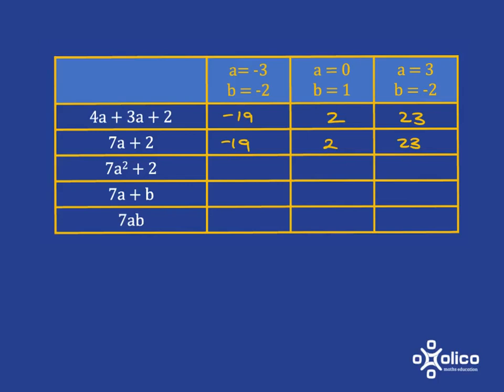And for 7a squared plus 2, I have to take 7 and then I've got to take negative 3 and square it. Negative 3 squared is negative 3 times negative 3, which is 9. Nine 7s or 63 plus 2 gives me 65. And again, we'll work out the other two in a similar way, and there are the answers.